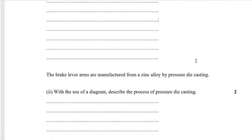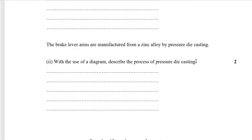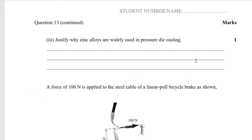Brake lever arms manufactured from a zinc alloy with pressure die casting — with use of a diagram, describe the process of pressure die casting. Watch my video on casting; it's one of the videos I'm most proud of. Justify why zinc alloys are widely used for pressure die casting. This relies on an older understanding of the syllabus — the syllabus changed in 2001 and then again in 2011.